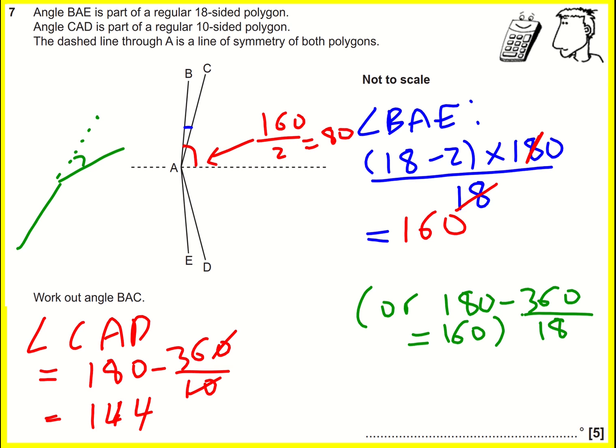And then this angle here is going to be my 144 divided by 2, which is 72. And therefore, angle BAC will be the difference between those. It will be 80 minus 72, it's going to be 8 degrees. Okay, happy with that. Nice.